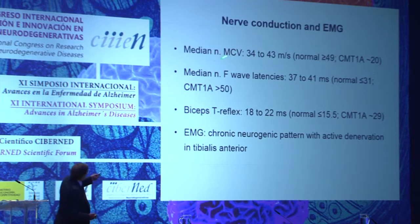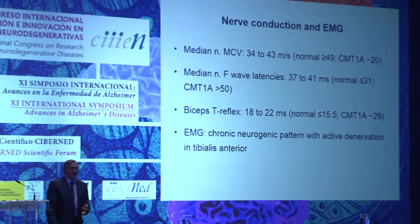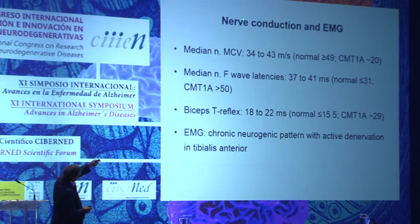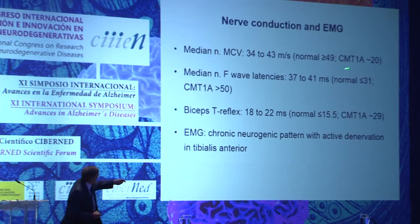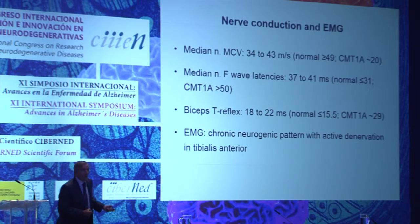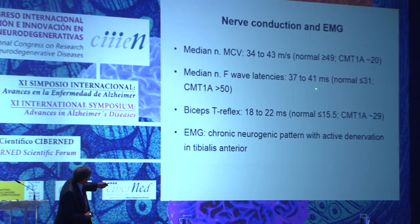We carried out nerve conduction studies of the median, ulnar, peroneal, and tibial nerves. The results of median nerve conduction studies in all patients ranged from 34 to 43 meters per second — normal is greater than 49 meters per second, and in our CMT1A series, 20 meters per second — placing these patients intermediate between CMT1A and normality. Median F-wave latency ranged from 37 to 41 milliseconds — normal 31, in CMT1A 50 — again between normality and CMT1A.